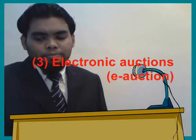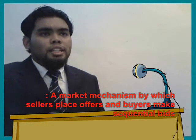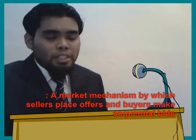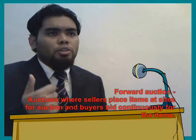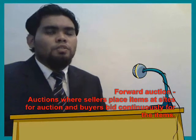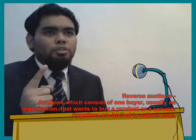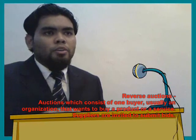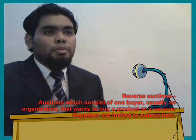The electronic auctions is the market mechanism in which sellers place offers and buyers make sequential bids. E-auctions can be divided into two types: forward auctions, where sellers place items at sites for auction and buyers bid continuously for the items; and reverse auctions, which have only one buyer — usually an organization that wants a product or service — and suppliers are invited to submit bids.